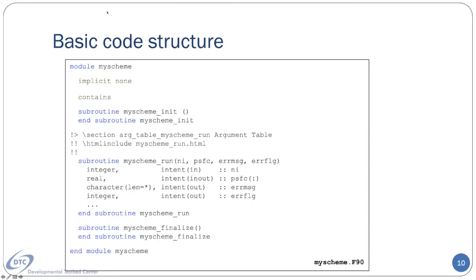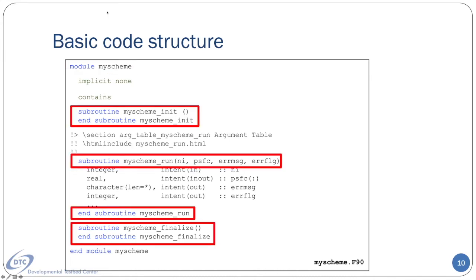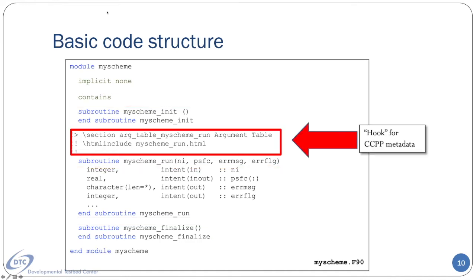Let's take a look at an example CCPP-compliant scheme's code structure. Notice that the code exists within a Fortran module, and that the required subroutines with their special names exist within — they share the root module name with init, run, and finalize appended. Be sure to label the end statements for both the subroutine and module. For non-empty interface subroutines, there is a special Doxygen formatted hook. This does double duty as a signal for the CCPP framework parser, and as an insertion point for an automatically generated HTML table for the generated scientific documentation. It is important that these lines exist for proper execution of the CCPP framework.